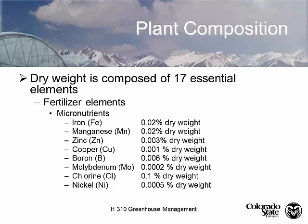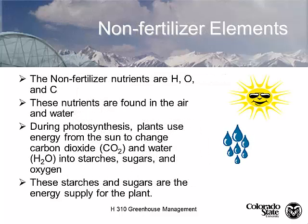Some textbooks don't include nickel or chlorine as essential — these two go back and forth. Molybdenum is absolutely essential, particularly in floriculture. Molybdenum is a divalent cation responsible for activating the enzyme nitrate reductase, which is required by essentially every plant. Carbon, hydrogen, and oxygen are found in air and water, and are taken up through photosynthesis and root absorption.